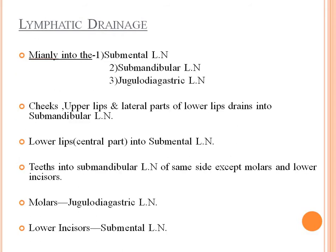Lymphatic drainage is mainly into the submandibular lymph nodes and the jugulodigastric lymph nodes. The cheek, upper lip, and lateral part of the lower lip drain into the submandibular lymph nodes. The central part of the lower lip drains into the submental lymph nodes. Teeth drain into the submandibular lymph nodes of the same side, except the molars, which drain into the jugulodigastric lymph nodes, and the lower incisors, which drain into the submental lymph nodes.